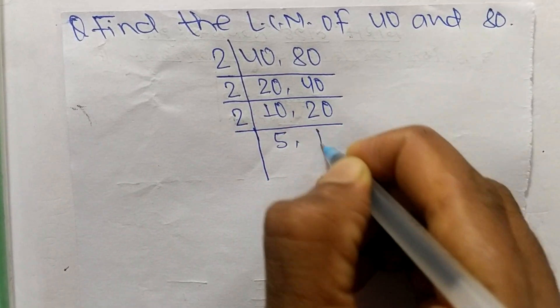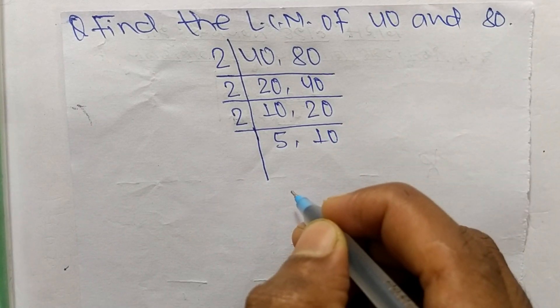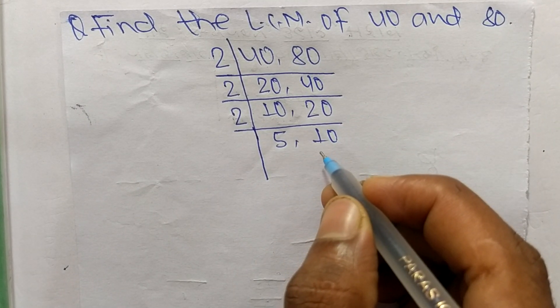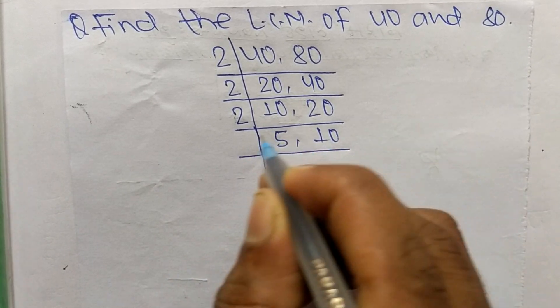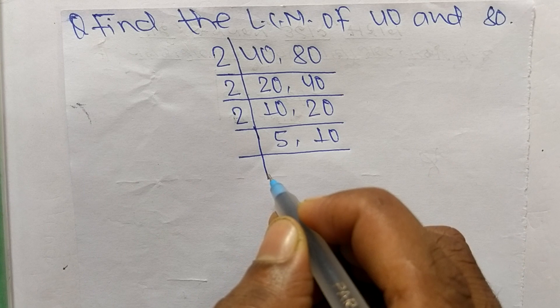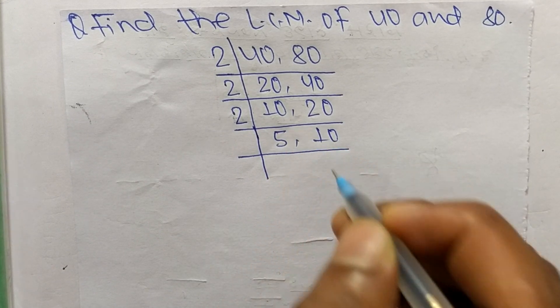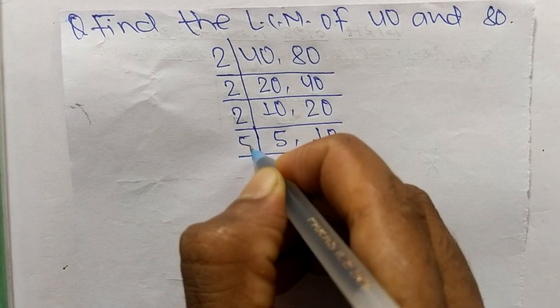Now 5 and 10 both are not exactly divisible by 2, so we choose the number greater than 2 that can exactly divide 5 and 10. The number is 5. So 5 times 1 mean 5 and 5 times 2 mean 10.